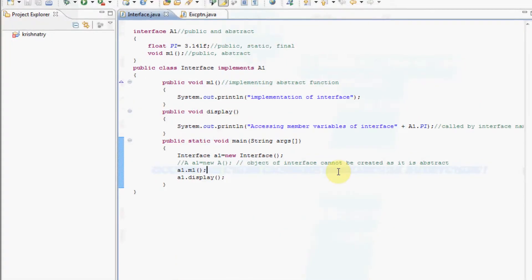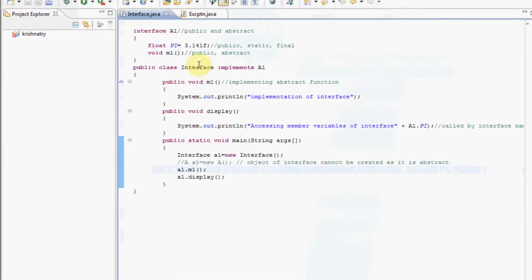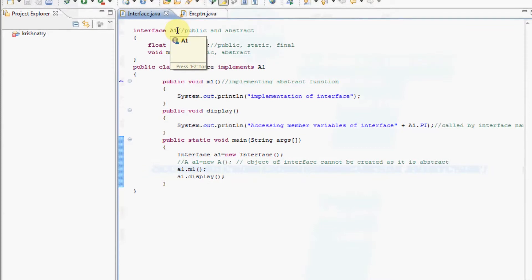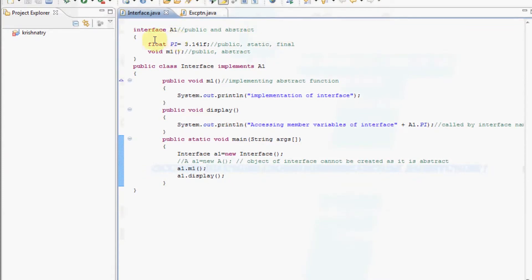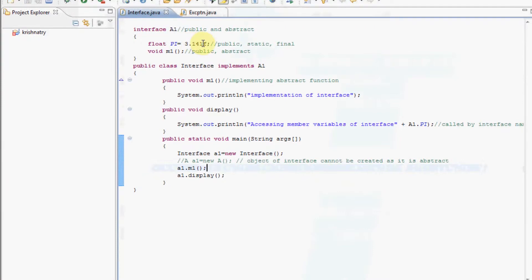Now let us consider an example. Here a1 is an interface. Interface is by default public and abstract. Float pi is equal to 3.141f.